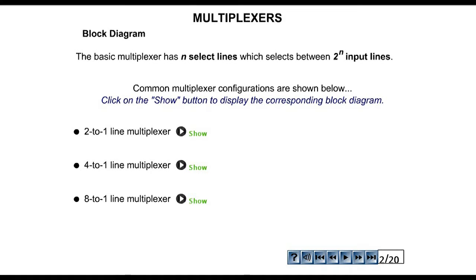Hello and welcome to the tutorial on multiplexers. In this tutorial we are going to learn how to implement the hardware behind the multiplexer and how to implement logic functions using a multiplexer. Basically, a multiplexer is a combinational circuit that selects binary information from many input lines — it selects only one and directs it to a single output line.